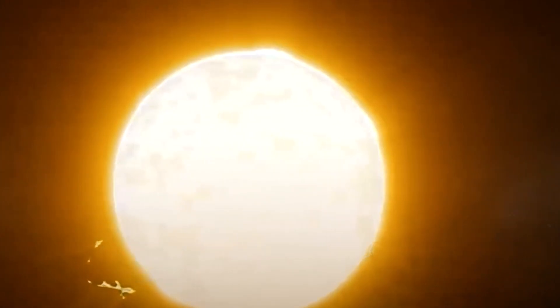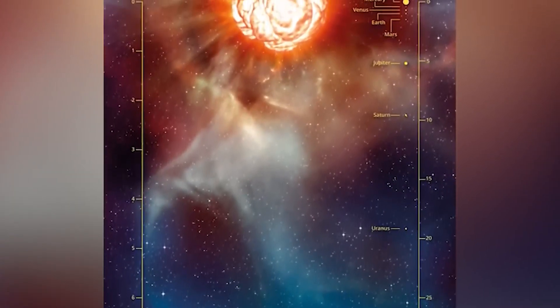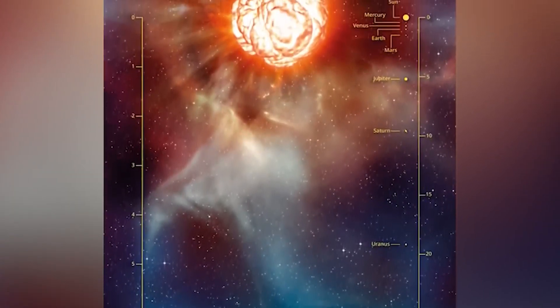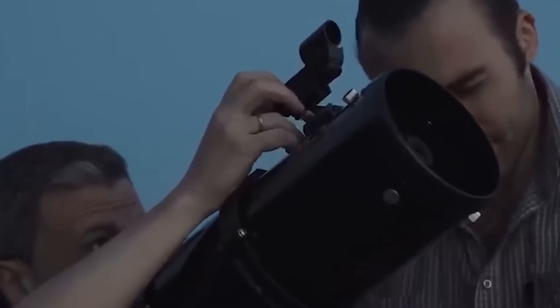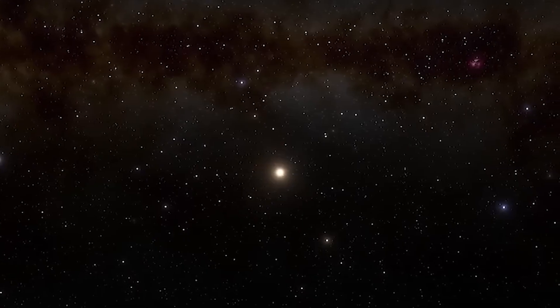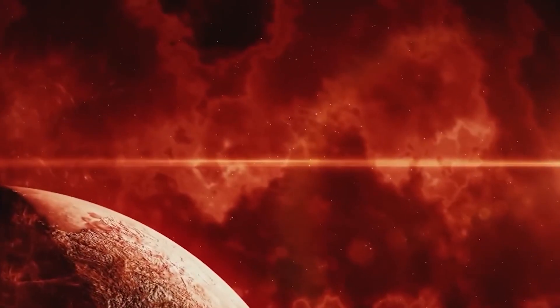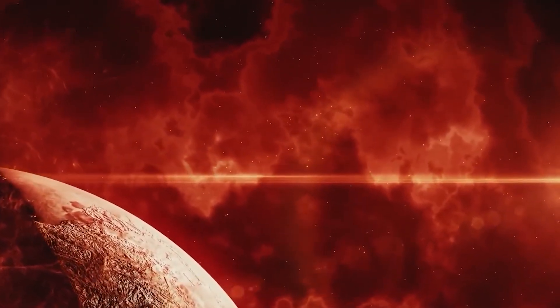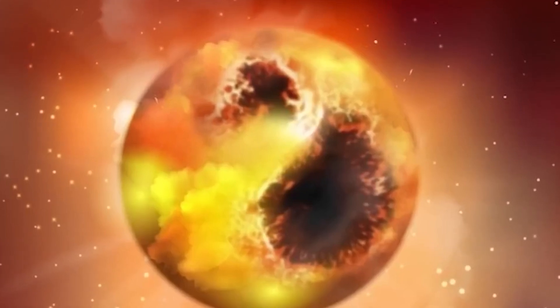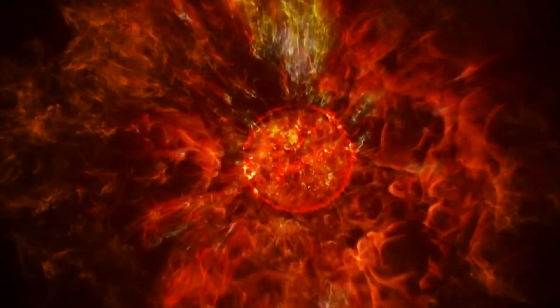But Betelgeuse is spinning much faster than scientists anticipated. By running computer simulations and models, researchers discovered that this rotational speed couldn't be explained by normal stellar evolution alone. That's when they came up with the theory that Betelgeuse may have absorbed a companion star at some point, adding angular momentum and mass, and causing it to spin faster than it should at this stage. This companion star theory provided a plausible explanation for Betelgeuse's strange behavior and it's changing the way scientists think about its future.